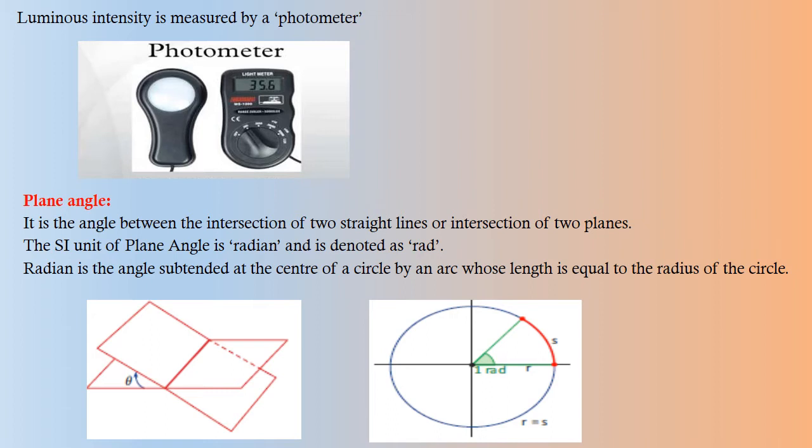Plane angle: It is the angle between intersection of two straight lines or intersection of two planes. The SI unit of plane angle is radian and is denoted as rad in lowercase. Radian is the angle subtended at the center of a circle by an arc whose length is equal to radius of circle.